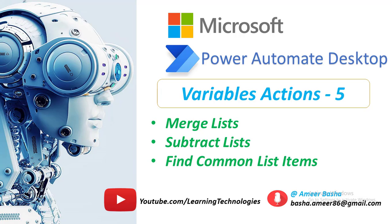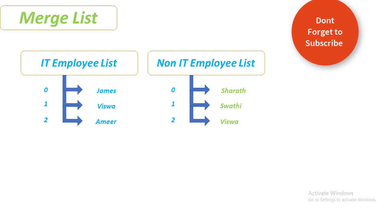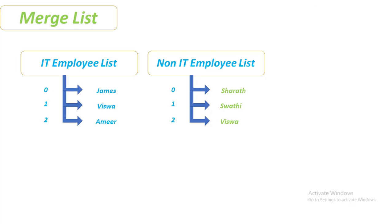Before starting, we will understand how these variables look. First, what is MergeList? Assume I have two employee lists in the organization — an IT employee list with James, Vishwa, and Amir, and a non-IT employee list with Serat, Swati, and Vishwa. I want to merge these two lists into one output list called MergeList.